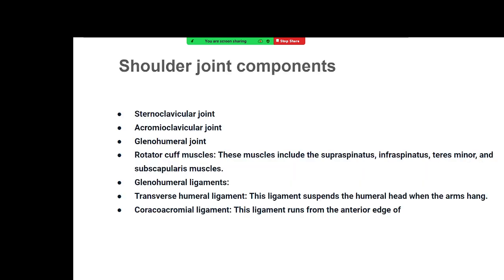The shoulder joint is a unique joint in the sense it has the maximum range of movement, but at the same time it is highly unstable. It is not a single joint — it is actually a combination of around five joints. The shoulder is not directly adhered to the body; it is slightly free from the core body but connected through a sequence of joints including the sternoclavicular, acromioclavicular, and glenohumeral joints.